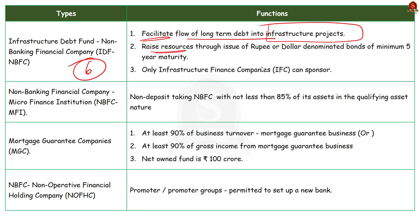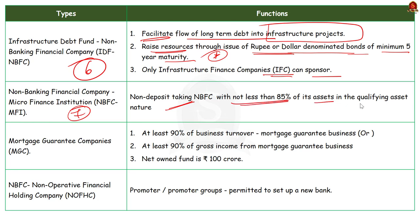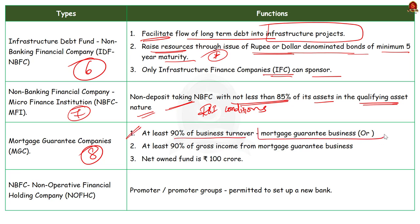Infrastructure Debt Fund NBFCs raise resources through issue of rupee or dollar denominated bonds of minimum five years maturity. Only infrastructure companies can sponsor these infrastructure debt fund NBFCs. The seventh type is the NBFC Microfinance Institution — a non-deposit taking NBFC having not less than 85% of its assets in the nature of qualifying assets satisfying certain criteria mandated by the RBI. The next type is mortgage guarantee companies — financial institutions for which at least 90% of business turnover is mortgage guarantee business, or at least 90% of gross income is from mortgage guarantee business, and net owned fund is 100 crore.